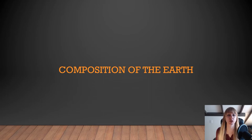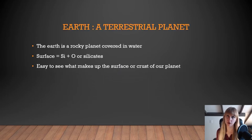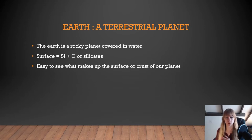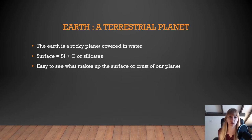Let's start with the composition of the Earth. The Earth is a terrestrial planet, meaning it is one of the four inner planets: Mercury, Venus, Earth, and Mars. They are all the terrestrial planets, meaning it is Earth-like.